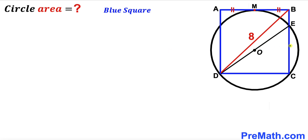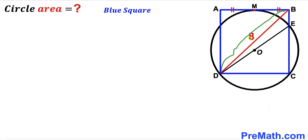Welcome to PreMath. In this video we have a circle with center O and a blue square ABCD, such that point M is the point of tangency. As a result, segment AM is equal to segment MB. Moreover, the diagonal BD of this square is 8 units, and our task is to calculate the area of this circle.